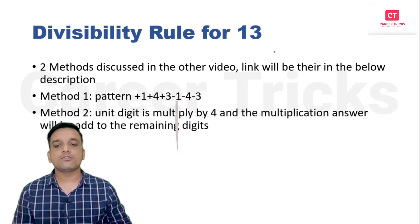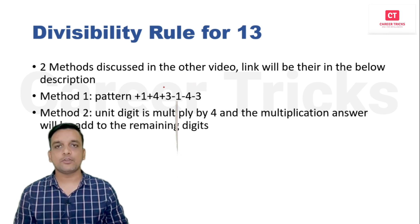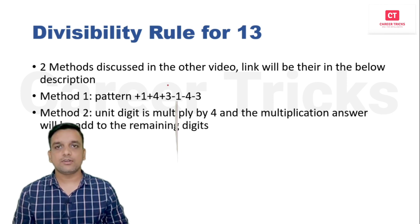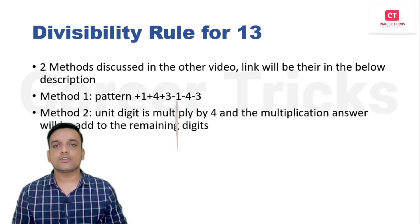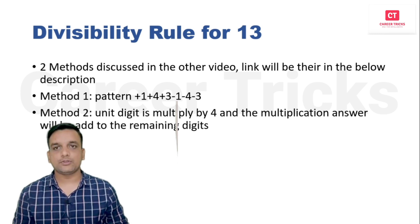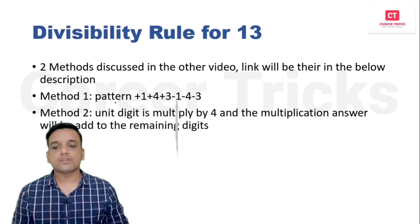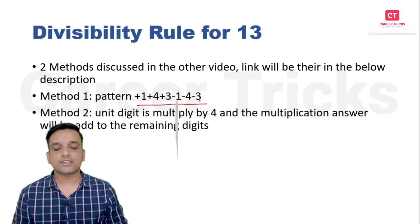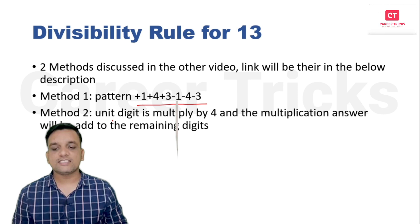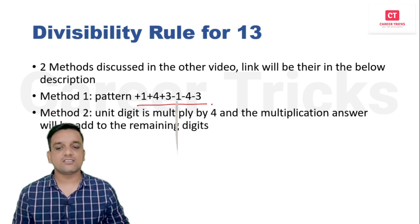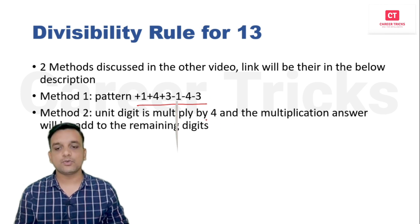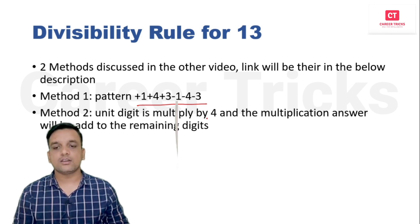Divisibility rule for 13: two methods are covered in a separate video — the link is in the top right corner and in the description. Method 1 uses the pattern +1, +4, −1, −4, +3. Method 2 multiplies the unit digit by 4 and adds the result to the remaining digits. Watch that video to see how these methods are applied in detail.